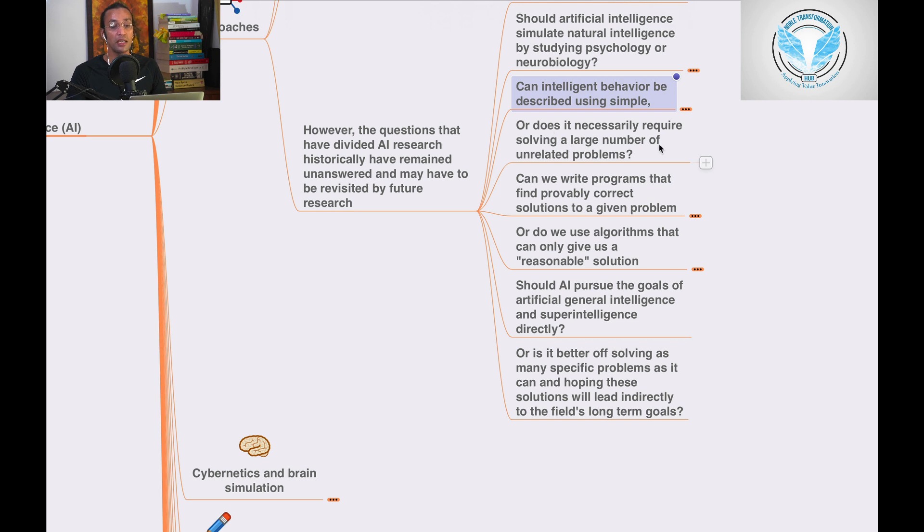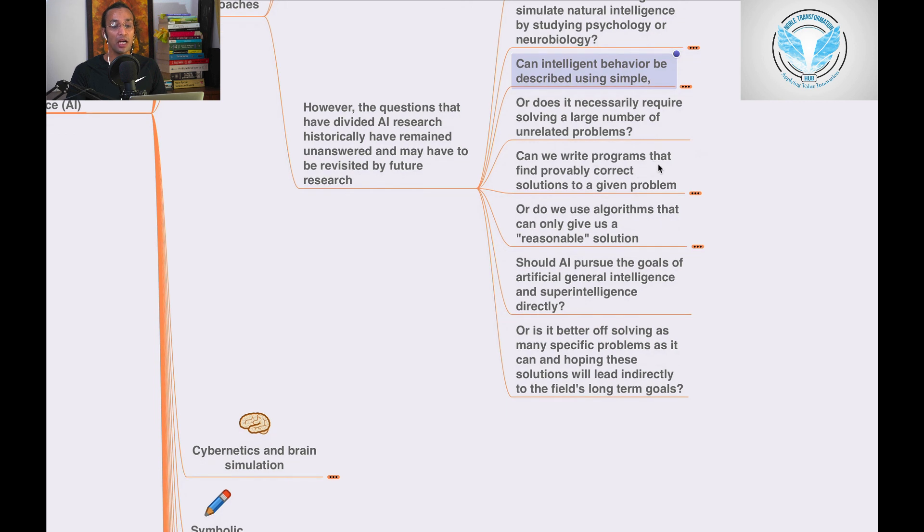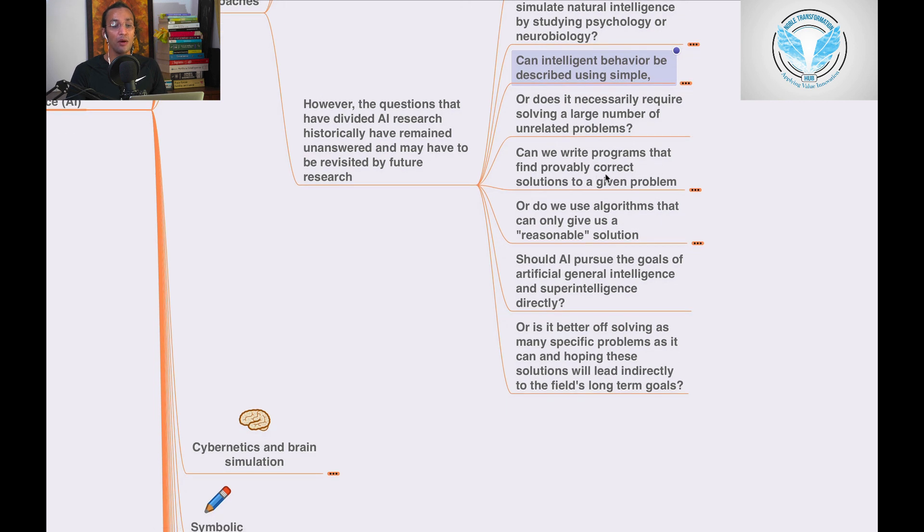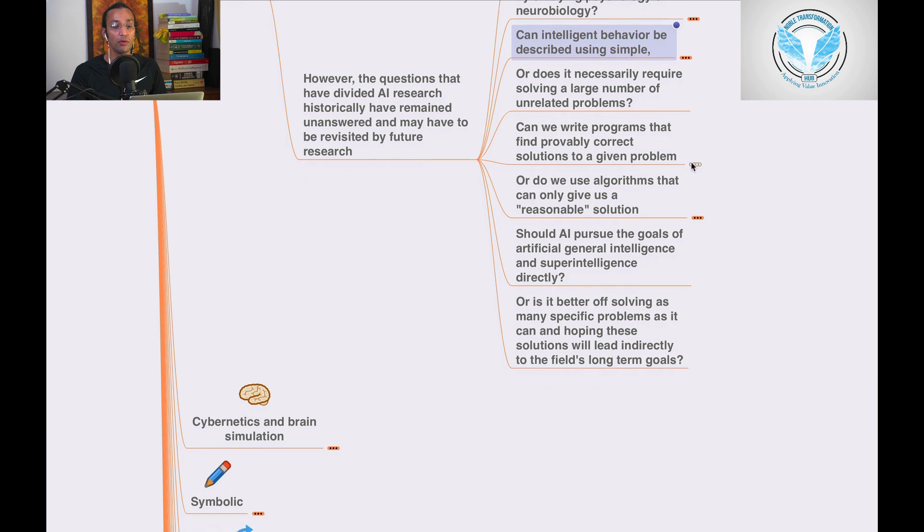Or does it necessarily require solving a large number of unrelated problems? Can we write programs that find probably correct solutions to given problems using symbolic logic and knowledge?